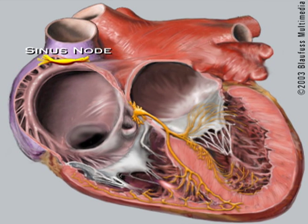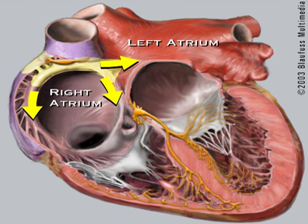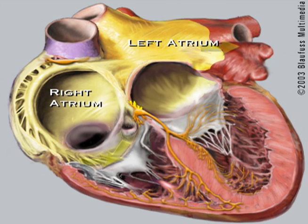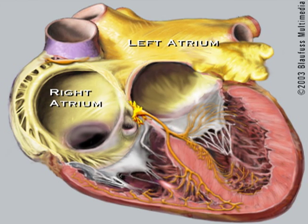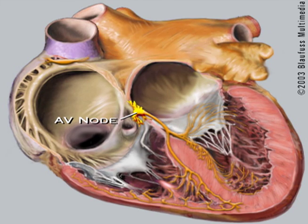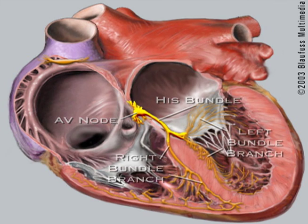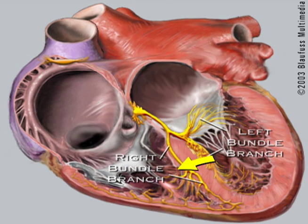To give you an idea of the mechanism behind AVNRT, let me show you this Blaufus.org animation. As you can see, during a normal beat, the electricity starts at the sinus node. The electricity then passes through the two top chambers of the heart, the atria, down to the normal conduction tissue — the normal bridge between the top and the bottom chambers called the AV node. After the electricity heads to the two bottom chambers of the heart, the ventricles, the heart squeezes.